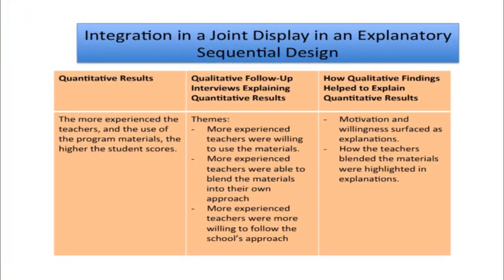These joint displays can thread throughout all different types of designs. For an explanatory sequential design, the first column shows the quantitative results — for example, that the more experienced the teachers in using program materials, the higher the student scores. The second column shows the qualitative follow-up of interviews asking about teachers' experience using these materials. The final column shows how the qualitative findings help to explain the quantitative results. This is a joint display set up for an explanatory sequential design.